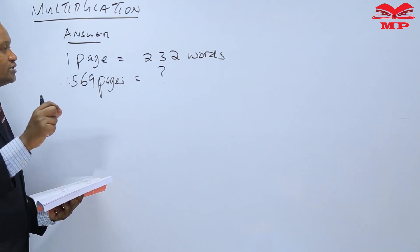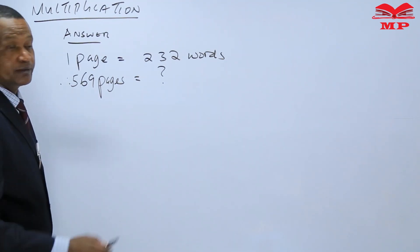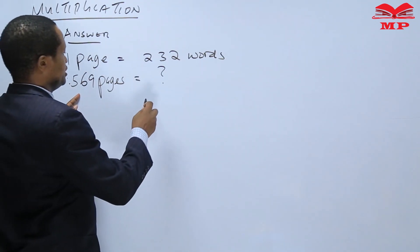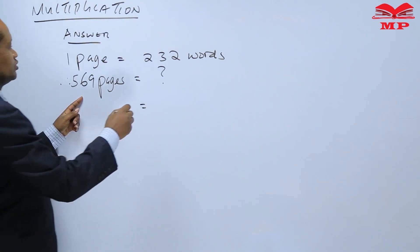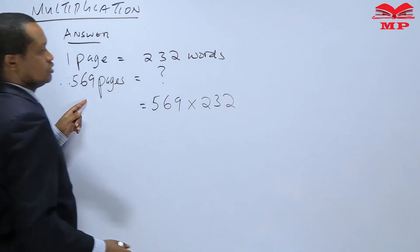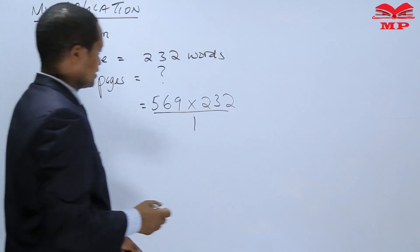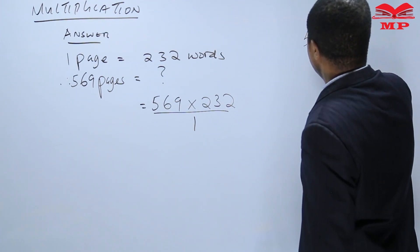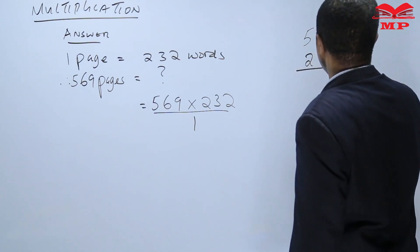So if you want to know how many words are in the whole of this book, then we will multiply. We will get the product of the number of pages and the number of words. The number of words that are there in a book will be equal to 569 times 232. So we can now multiply 569 by 232.